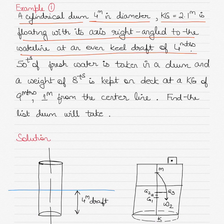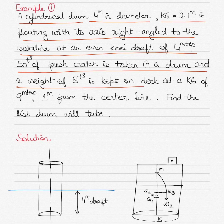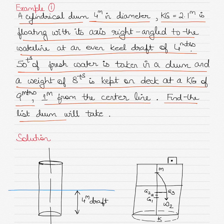50 tons of fresh water is taken into the drum, and a weight of 8 tons is kept on deck at a KG of 9 meters, 1 meter from the centerline. Find the list the drum will take. If you replace the drum with the word 'ship', it pretty much applies to a ship, where you load 50 tons of water or keep a weight on deck and calculate the list.